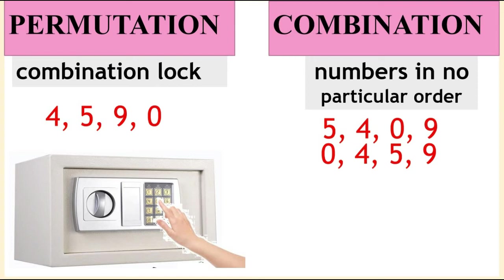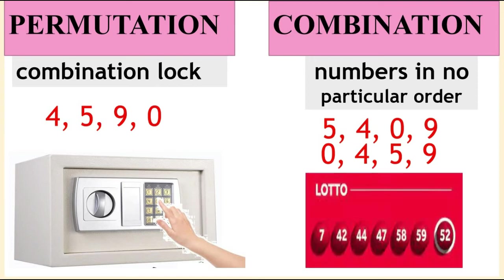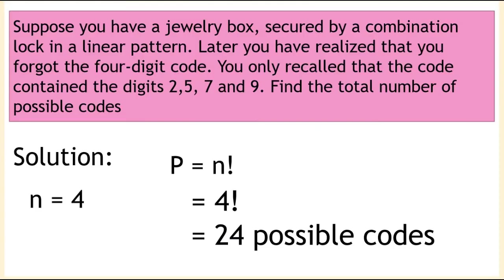Another example is playing lotto. To win this game, you are asked to choose six numbers out of, say, 1 to 75. If you have chosen this combination—7, 42, 44, 47, 58, 59—and regardless of the order you will win the lotto game, this is an example of a combination.